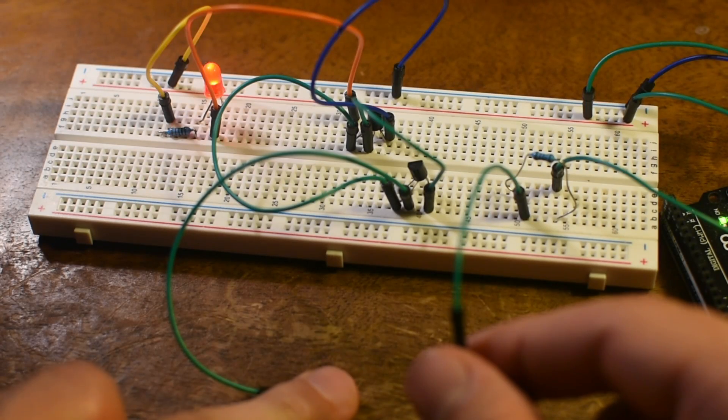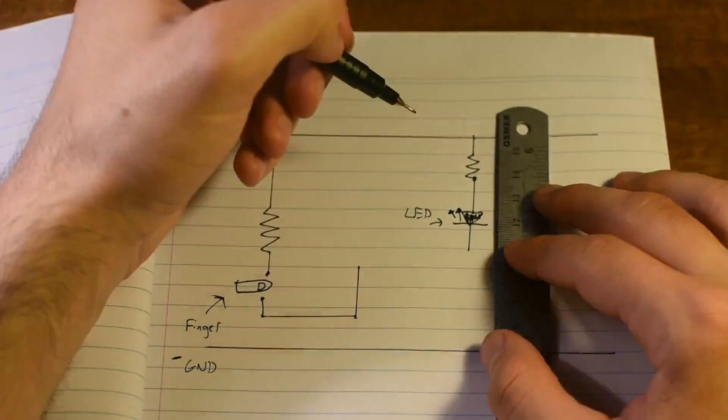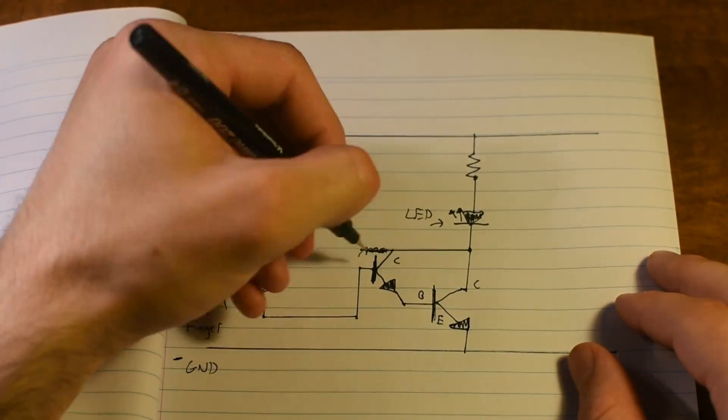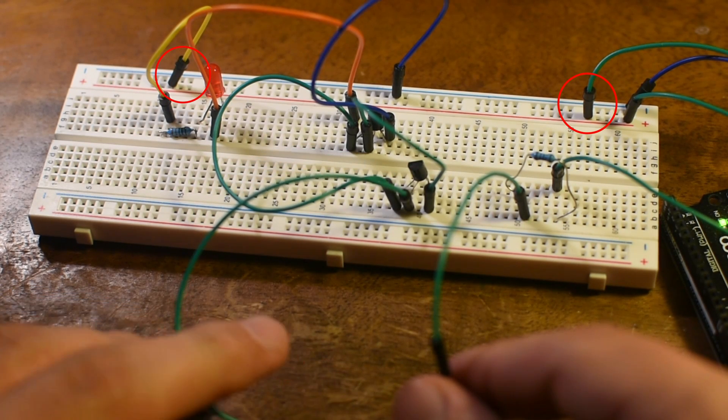Alright, I need to get on with this video. Let's take a look at the different sections. We have two wires coming out of our 5 volt rail here.